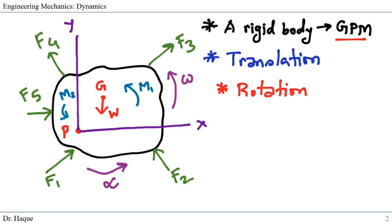The black line indicates a body, and if it is under general plane motion, it will have translation and rotation. We can see some external forces acting on the body from F1 to F5. If these forces are unbalanced, the body may have acceleration.